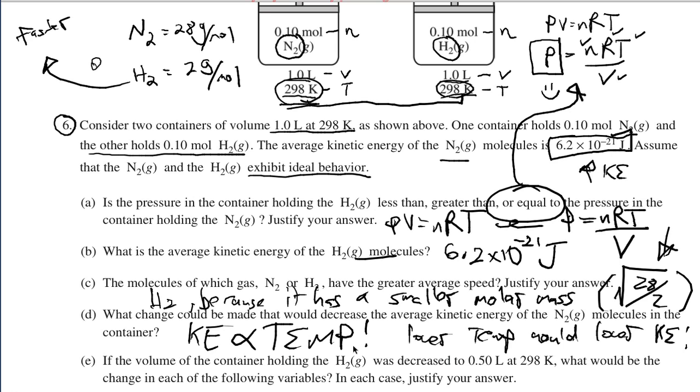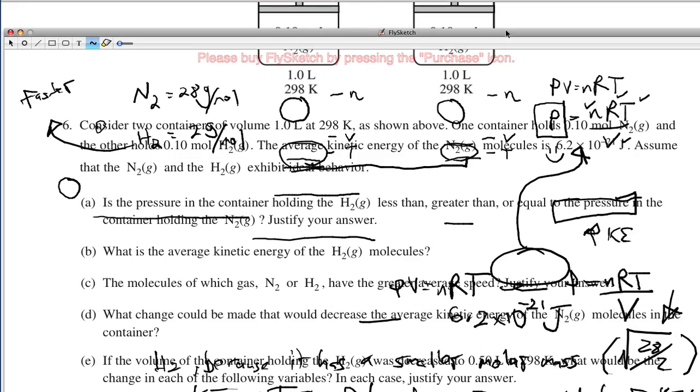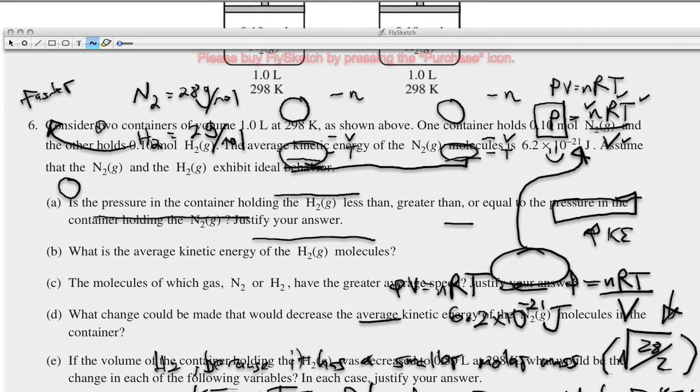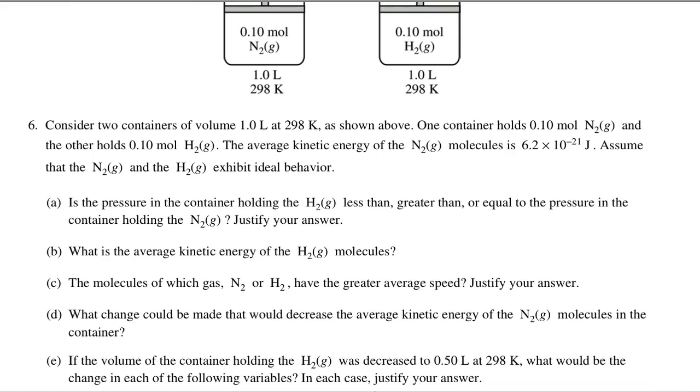If the volume of the container holding H2 was decreased to 0.5 liters at 298K, what would be the change in each of the following variables? Justify your answer. Got to give me a second here to readjust this before I can solve it.